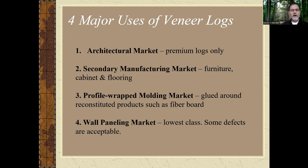The profile wrap molding market fits between the previous two. This veneer is wrapped or glued around reconstituted products such as fiberboard and is used to substitute for solid wood molding. Finally, the wall paneling market is the lowest class and includes eight-foot mismatched wall panels, because panels do not need to match and some wood defects, if sound, are acceptable.